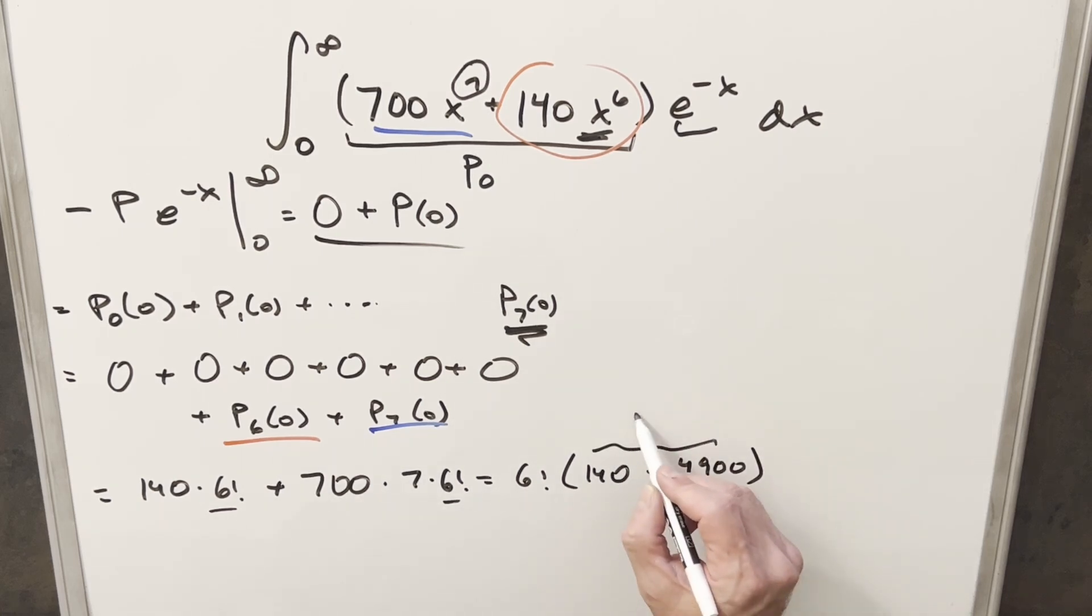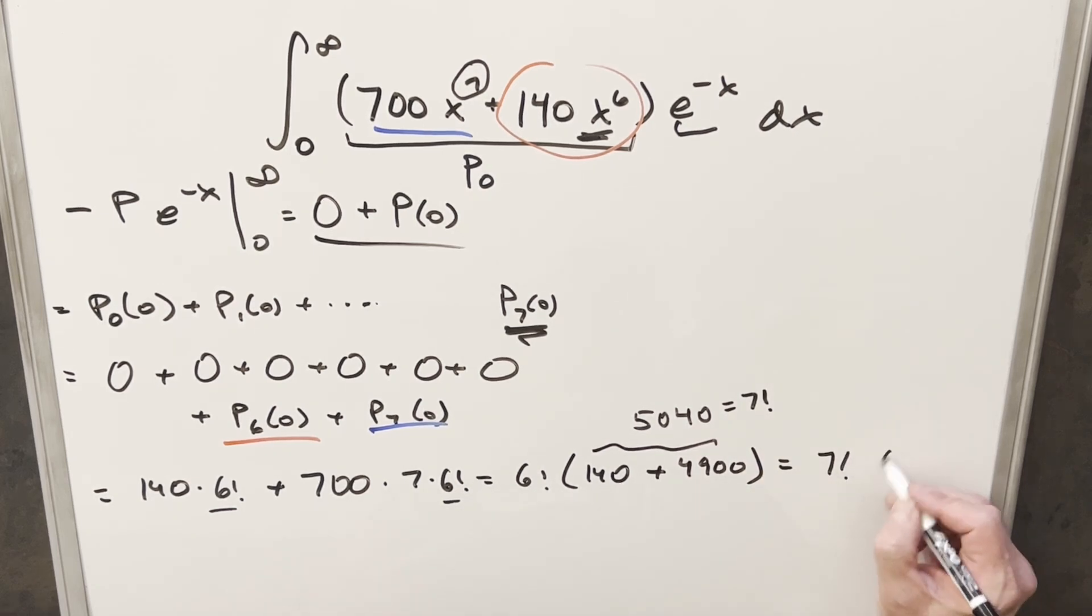But then adding this together, this here becomes 5040. And you may not recognize 5040, but 5040 is actually the same thing as 7 factorial. So what we have here is actually 7 factorial times 6 factorial. And now at this point, we could probably just leave this, but there's actually kind of another nice simplification. You may recognize this 7 factorial times 6 factorial.